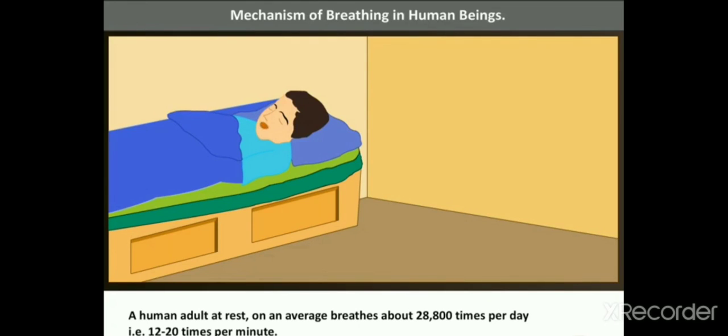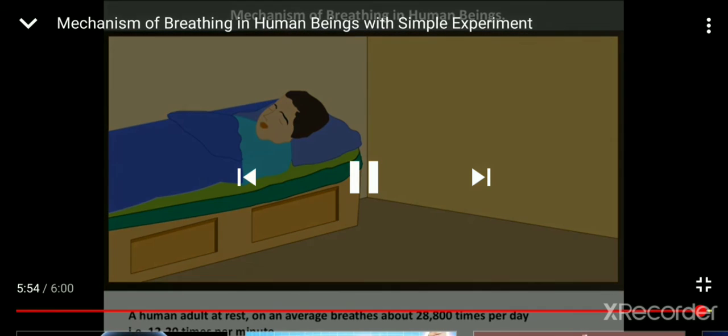A human adult at rest, on an average, breathes about 28,800 times per day. In other words, 12 to 20 times per minute.